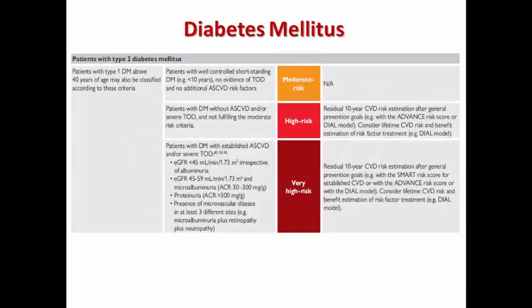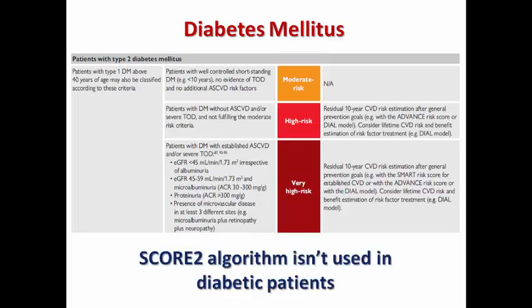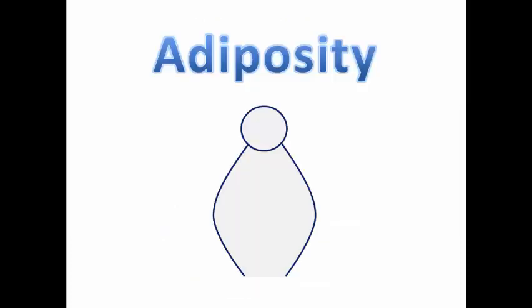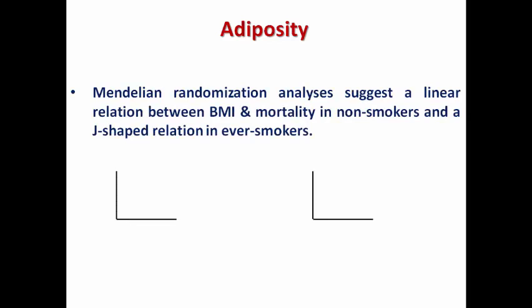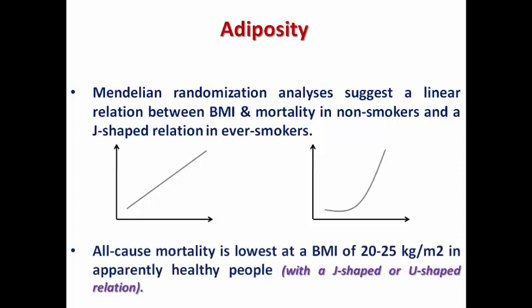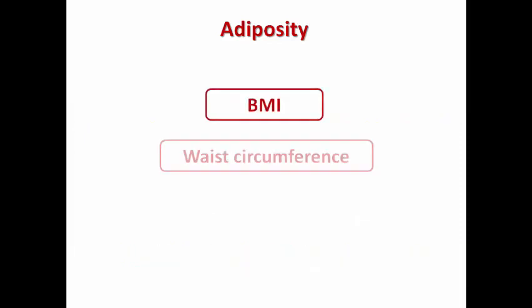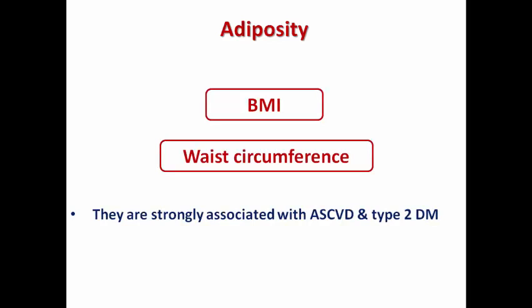Because of this, diabetes has a different algorithm for risk stratification — we cannot use the SCORE2 algorithm in diabetics. The last risk factor we will discuss today is adiposity. Mendelian randomization analysis suggests a linear relationship between body mass index and cardiovascular mortality in non-smokers and a J-shaped relation in ever-smokers. All-cause mortality is lowest at the optimal BMI of 20 to 25 in apparently healthy people. BMI and waist circumference are both strong risk factors for atherosclerotic cardiovascular disease and type 2 diabetes and should be treated as important therapeutic targets.